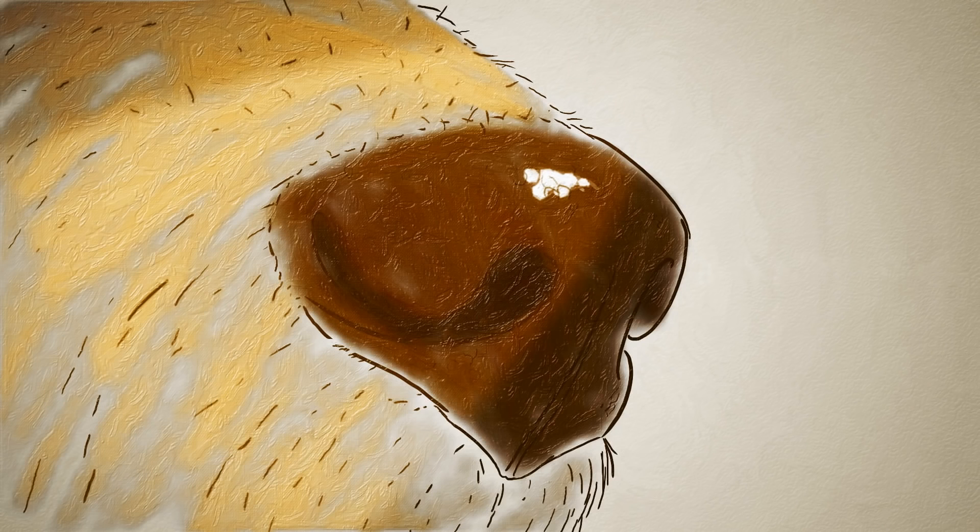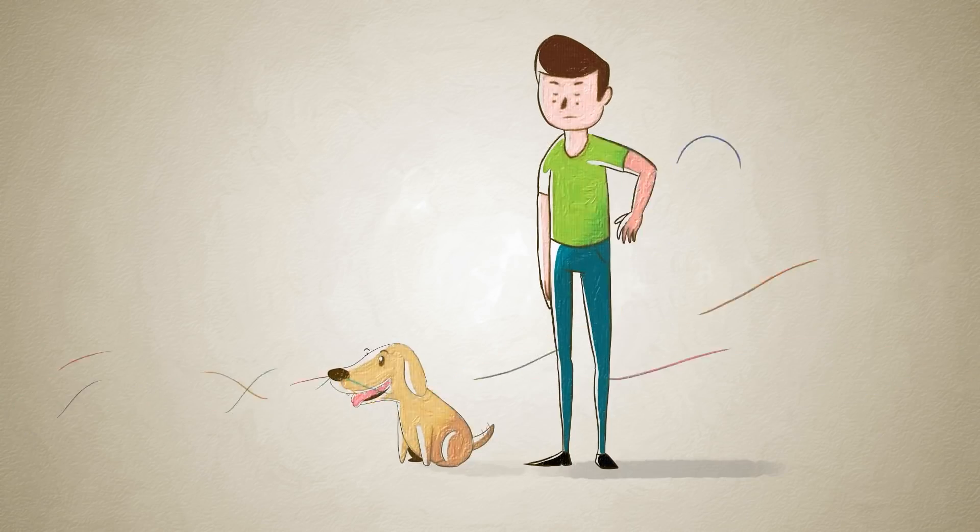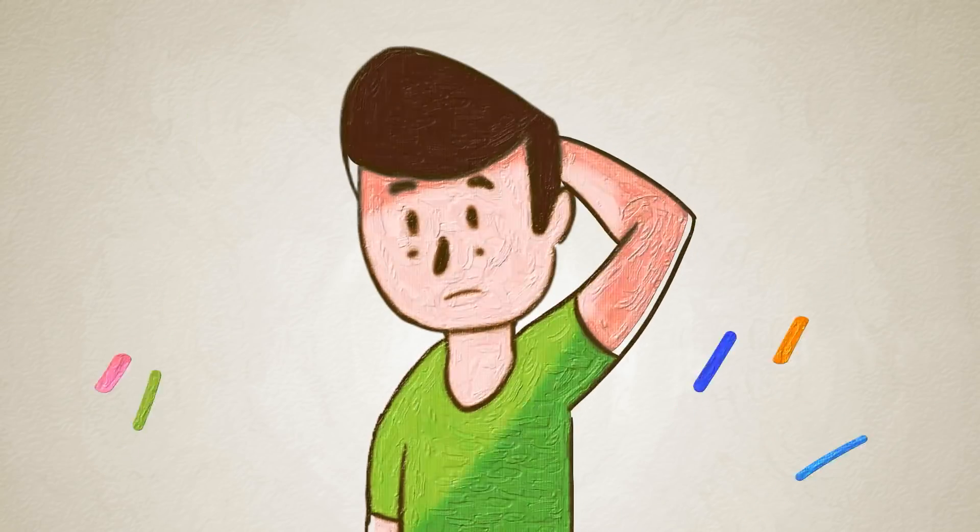Because olfaction is more primal than other senses, bypassing the thalamus to connect directly to the brain structures involving emotion and instinct, we might even say a dog's perception is more immediate and visceral than ours.